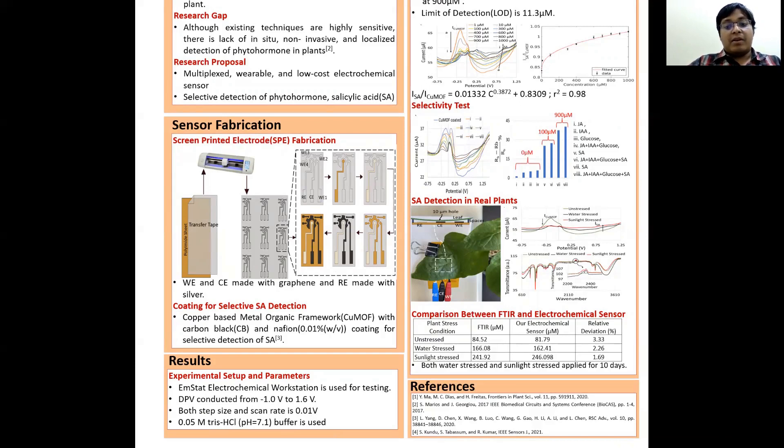The FTI result of the concentration of salicylic acid matches with the DPV results with less than 5% deviation. We have observed that the salicylic acid level is much higher in sunlight distressed plant compared to that of the water stressed plant.